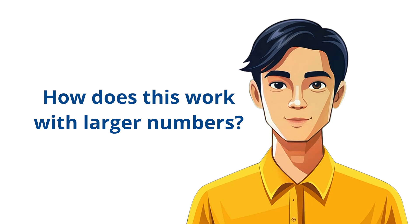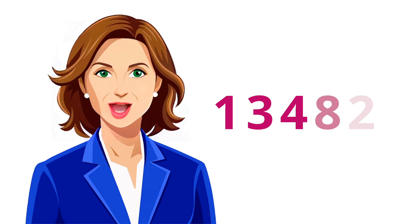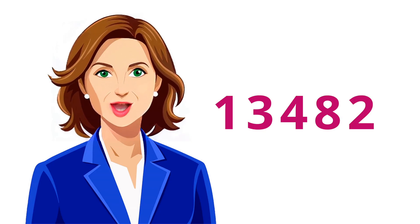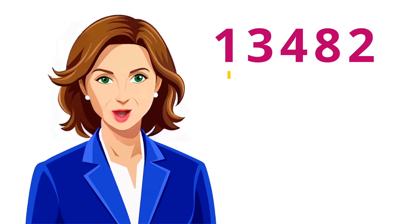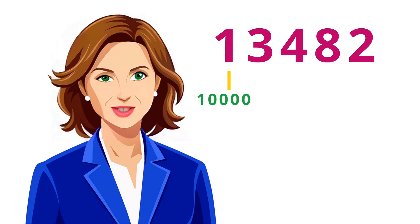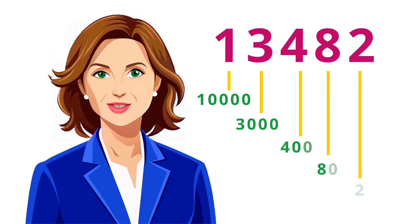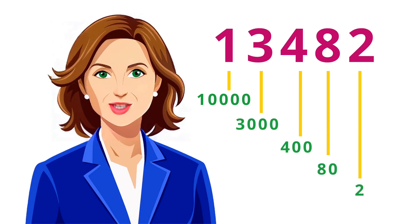How does this work with larger numbers? The same principles apply even with larger numbers. For example, if we have the number 13,482, the place value of 1 is 10,000 in the ten-thousands place, the place value of 3 is 3,000 in the thousands place, and so on.